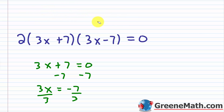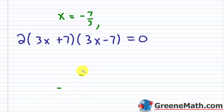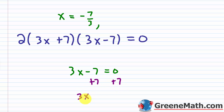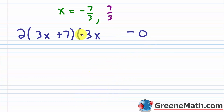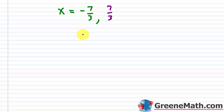Writing x equals negative 7 thirds up top, for the other factor: 3x minus 7 equals 0, adding 7 to both sides gives 3x equals 7, and dividing by 3 gives x equals 7 thirds. In the interest of time, I'll tell you in advance that both of these solutions are going to work — they're valid solutions. But again, when solving logarithmic equations, you've got to stop and check to make sure you don't end up with a domain restriction. Our solutions are x equals negative 7 thirds or 7 thirds.